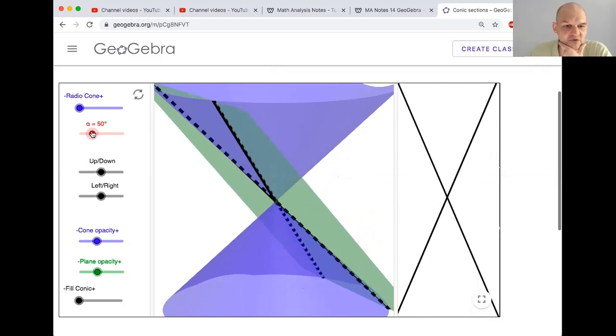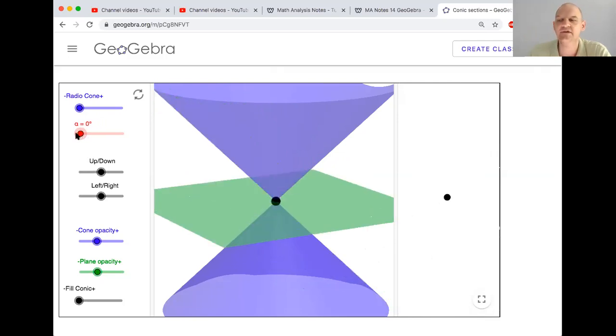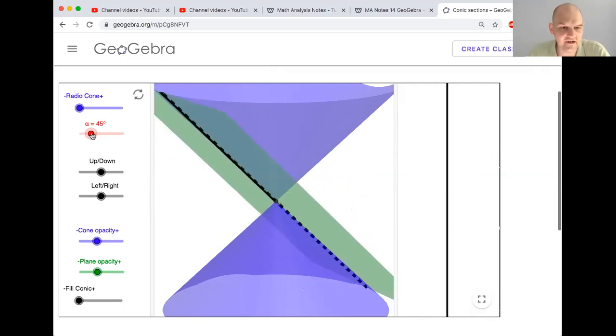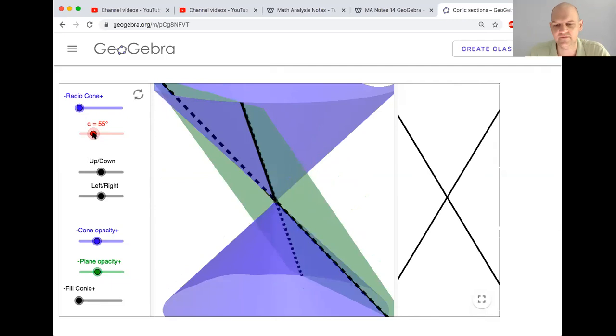Let me go back to exactly zero. You can get a point. So now we have a point, a line, and there's one other thing that you can get, which, let me see if I can get, oh yeah, I got a pair of intersecting lines. These are all the things you can get when you cut a cone with a plane. These are the conic sections.